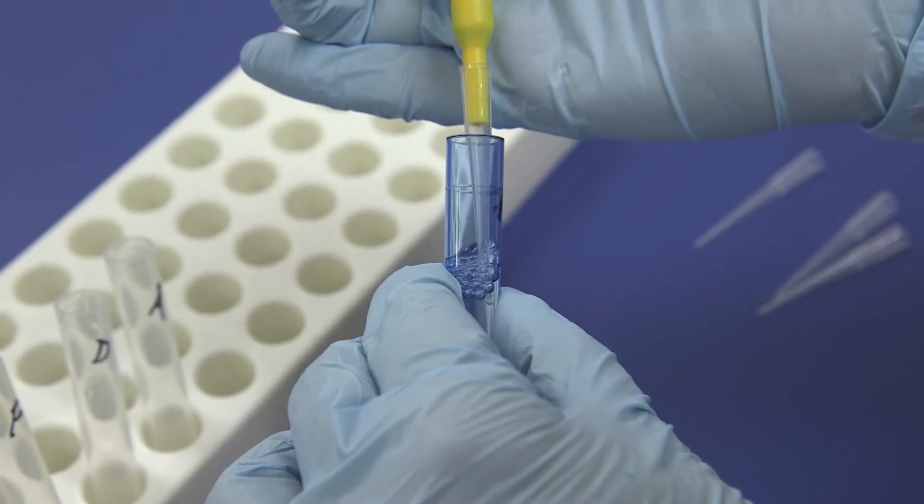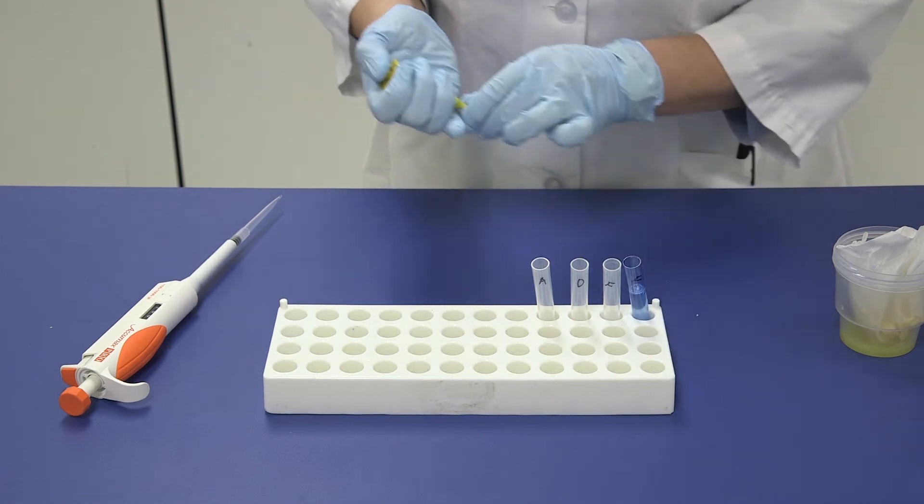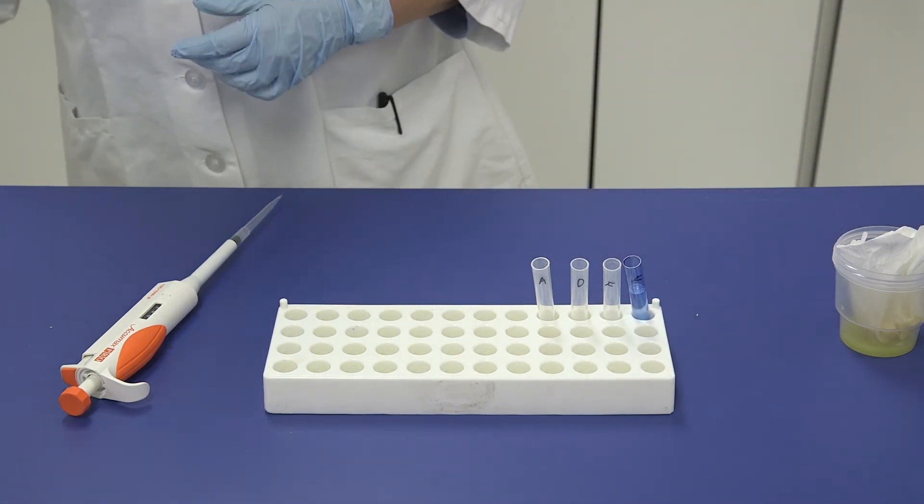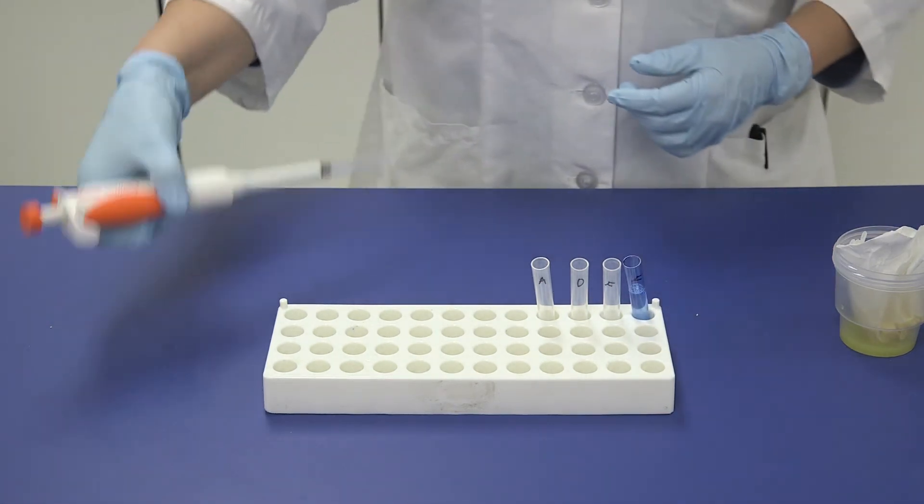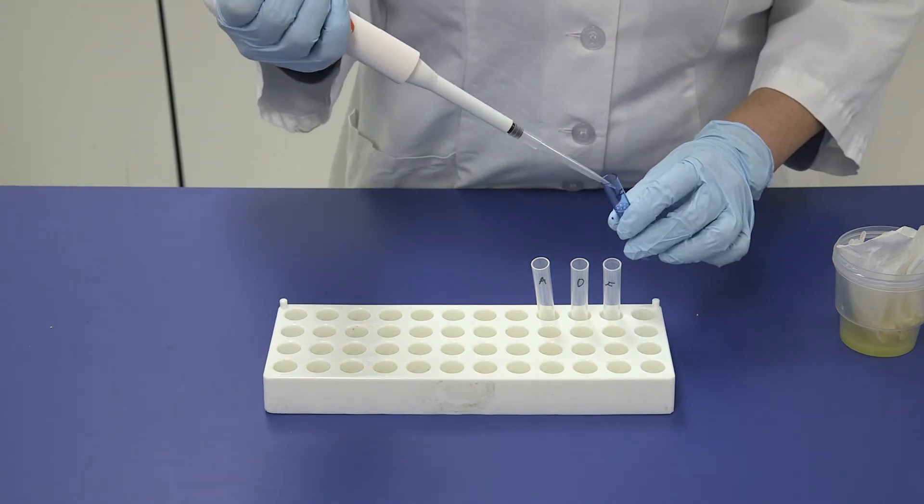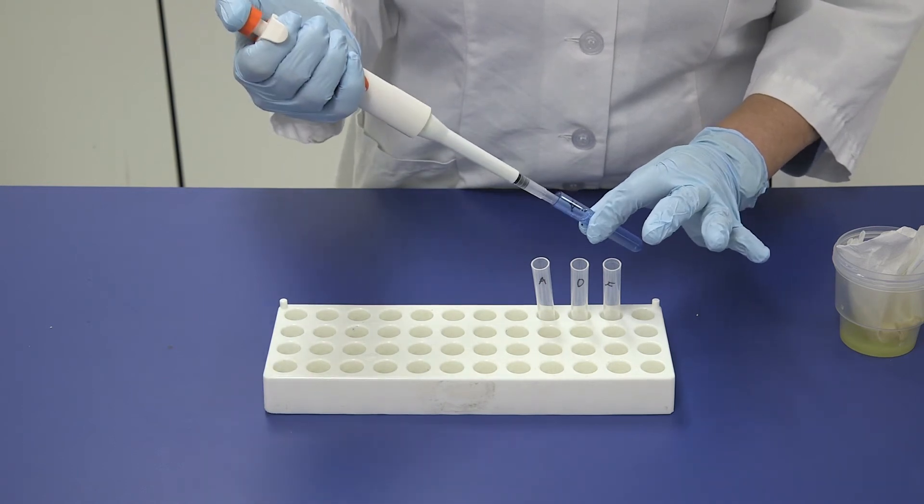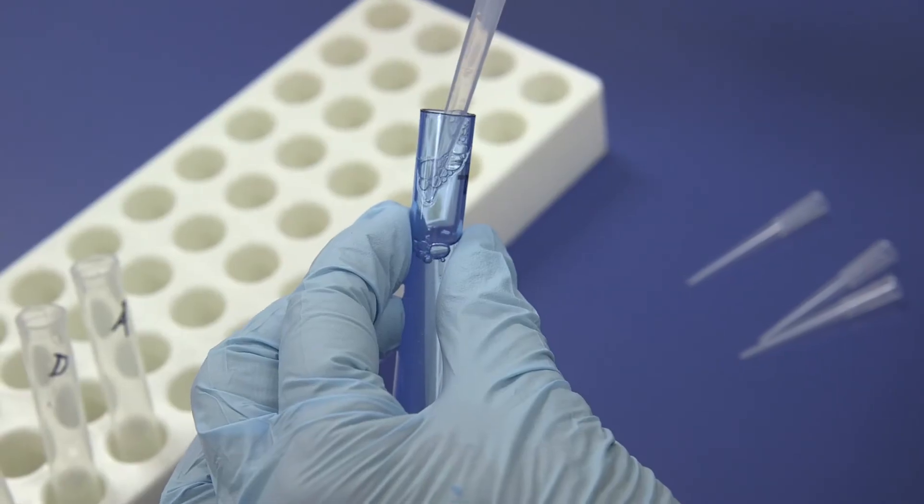Rinse the pipette tip in the DB5 by drawing up and down. Discard the tip and set the 50 microliter pipette aside. Pick up the large pipette with the tip from the prior buffer step and use this to mix the contents in the blue dilution tube labeled F by drawing the mixture up and down two to three times.